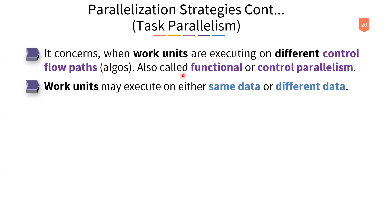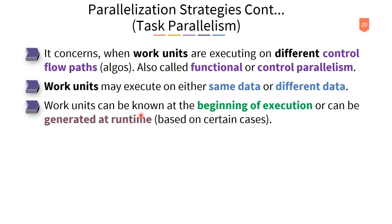Work units in task parallelism may execute on either the same data or different data groups. Work units can be known at the beginning of execution or can be generated at runtime. For example, you get input from a user, do some processing, store an item, then merge items or perform some computation — a sequence of operations defined in the control flow.